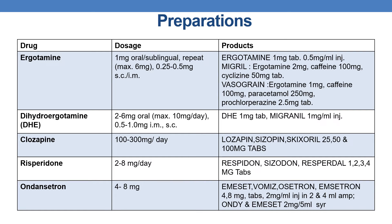Let us see some of the marketed preparations. The first is ergotamine. The dose is 1 mg oral or sublingual, repeat to a maximum of 6 mg. It is also available as 0.25 to 0.5 mg subcutaneous or intramuscular. Marketed products include ergotamine 1 mg tablet and 0.5 mg per ml injection. Mygril contains ergotamine 2 mg, caffeine 100 mg, and cyclizine 50 mg — a combination of 3 drugs.